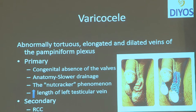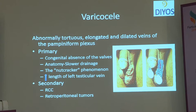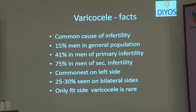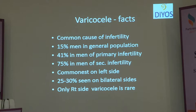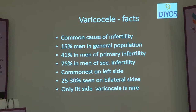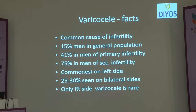We know this essentially as an abnormally tortuous, elongated and dilated pampiniform plexus. It is a known essential cause of male infertility in men. 15% of men in the general population will have it, and up to 30% with primary infertility, and almost three-quarters of men with secondary infertility will have associated varicocele as a cause. It is common on the left side, and isolated right varicocele are extremely uncommon — usually right varicocele will occur as bilateral varicocele.